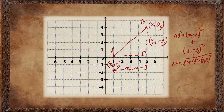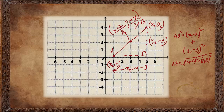We can also take the average as the midpoint of the line. The average of x1 and x2 is (x1 plus x2) divided by 2, and the average of y1 and y2 is (y1 plus y2) divided by 2. Together these give us the midpoint of the line.